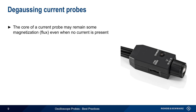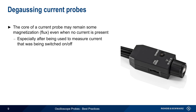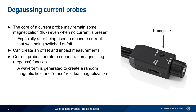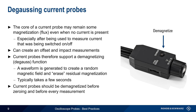The ferromagnetic core of a current probe may retain some magnetism or flux, even when there is no current present. This is not uncommon after a probe has been used to measure a current that was being switched on and off. This residual magnetism can lead to the creation of an offset and impact measurement results. Most current probes therefore support a demagnetizing or degauss function that can be launched either from the probe itself or via the scope's user interface. A special waveform is generated that creates an essentially random magnetic field, erasing any residual magnetism in the probe. This is normally a very quick process that only takes a few seconds. Whenever using current probes, it's a good idea to degauss the probe both before zeroing as well as before making measurements.